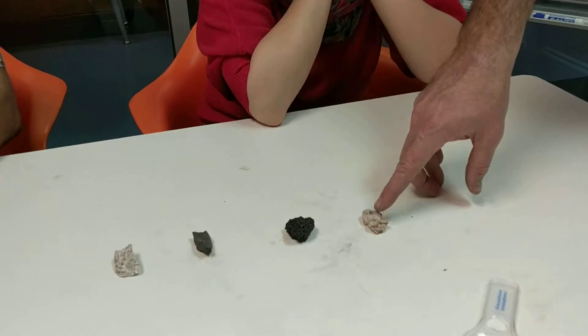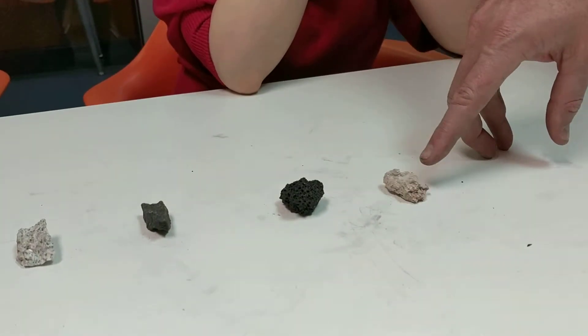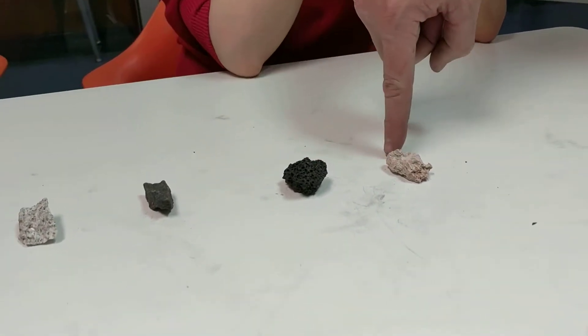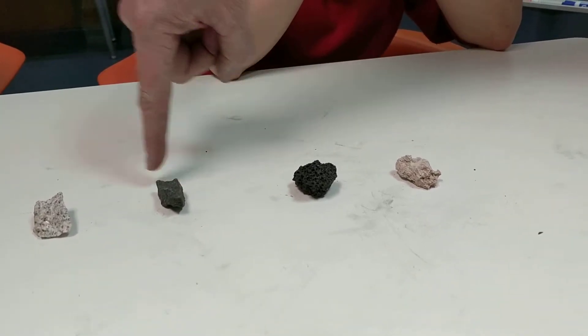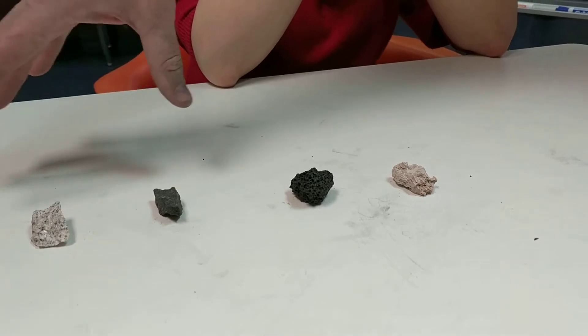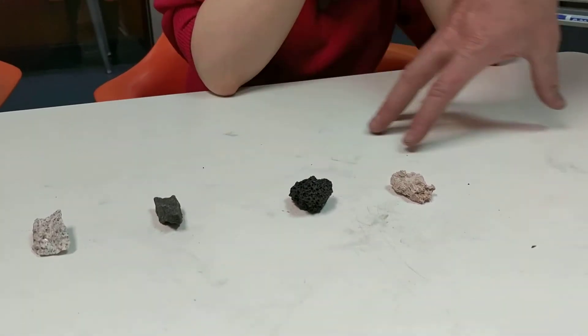Over here, we have a rock that's called pumice. So going from left to right, we have pumice, scoria, basalt, granite. And we're going to talk a little bit about each one of these in the next video.